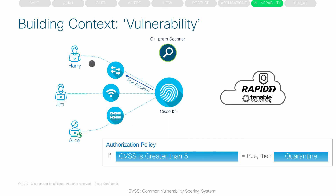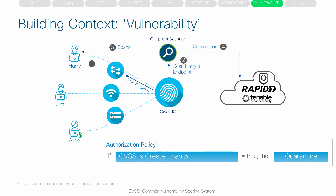Moving on to the vulnerability context — ICE can integrate with vulnerability scanners such as Qualys, Rapid7, and Tenable Security to control network access based on the CVSS score. CVSS stands for Common Vulnerability Scoring System, a number from 1 to 10 indicating the vulnerability status of an endpoint — the higher the number, the more vulnerable the endpoint. In the flow, the endpoint connects and gets full access, ICE marks it for a vulnerability scan, the scanner assesses and reports the CVSS, and ICE pulls the score and applies the authorization policy, potentially quarantining the endpoint.